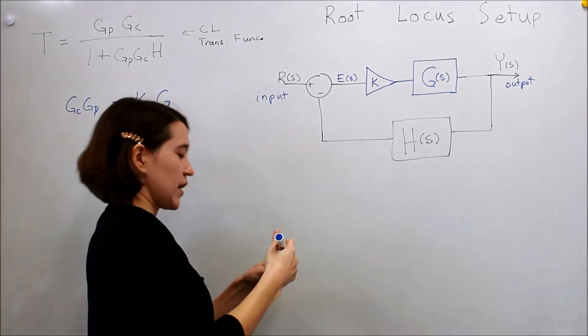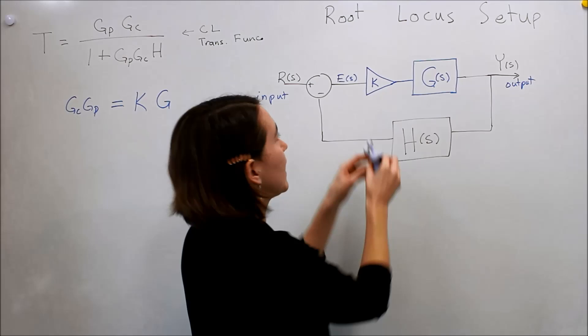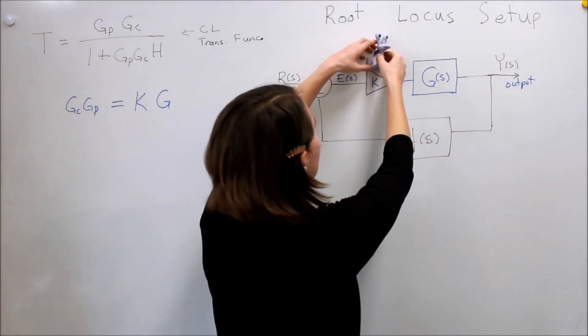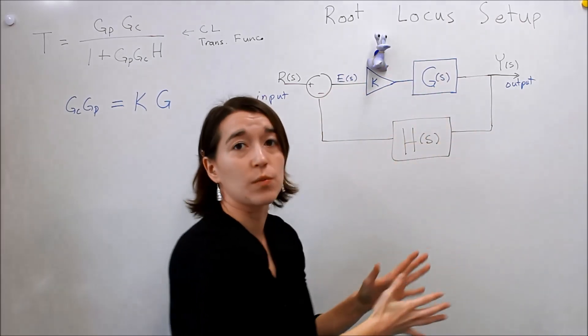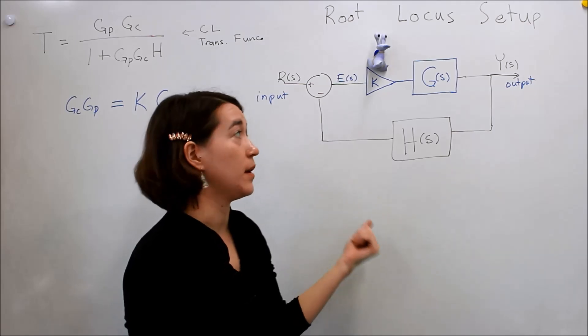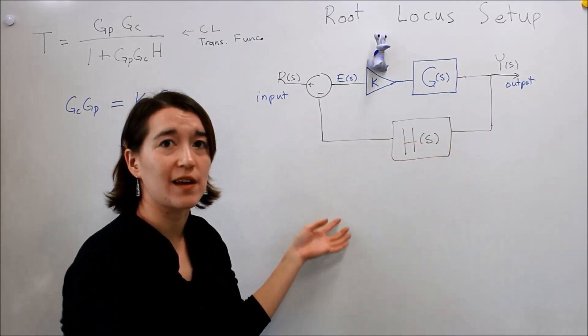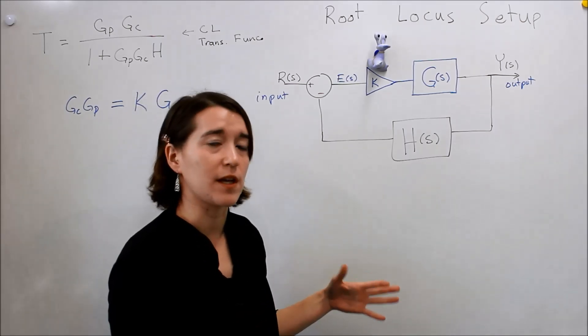And what we're trying to look at is how, if Valerie is the designer, how she can change K, this value, in order to make this closed loop stable. And if she picks a very high value of K, what will the poles of the system look like if she takes a very low value? So we'll actually be able to map that out on the s-plane.